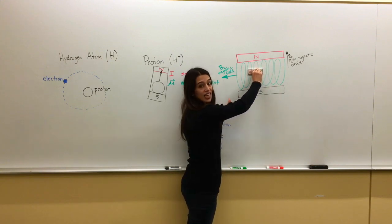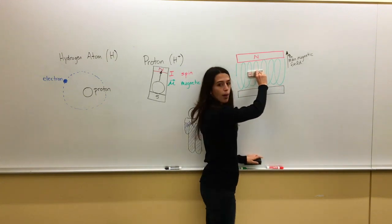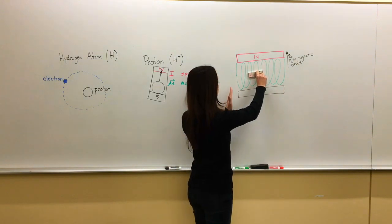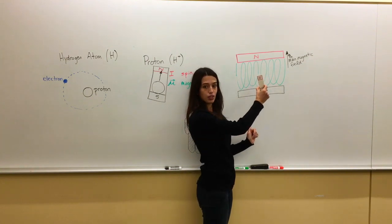But now all of a sudden, let's turn B1 off and just stop putting current through it. Now eventually, this little bar magnet is going to slowly but surely rise back up to be aligned with the main magnetic field.